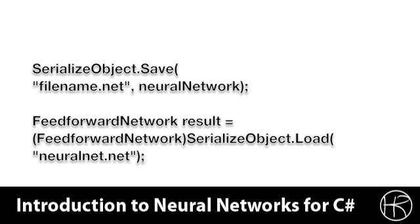Here you see the save routine. You pass in the name that you want to save the file to as well as the neural network. Load returns a feedforward neural network given the file name that you want to load it from. The SerializeObject class is just a simple wrapper around the built-in C Sharp serialization. It sets up everything necessary to serialize these objects and saves the object to the disk as you specify.